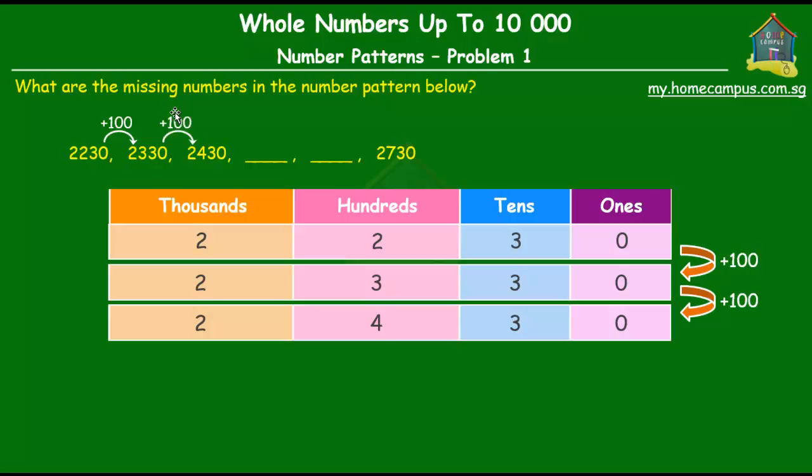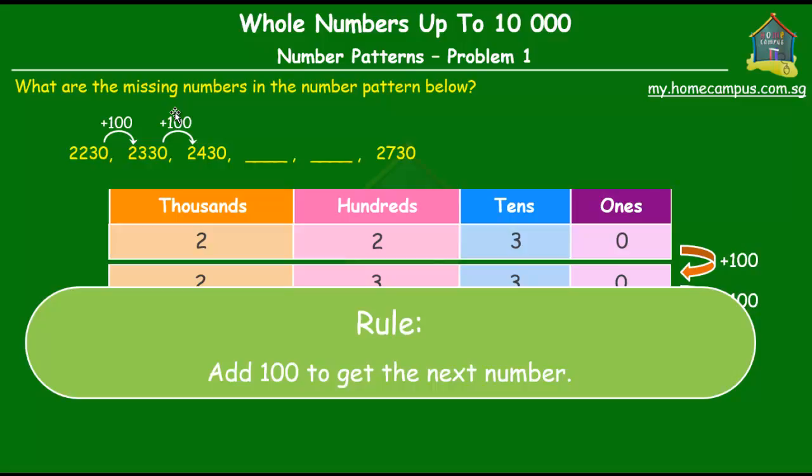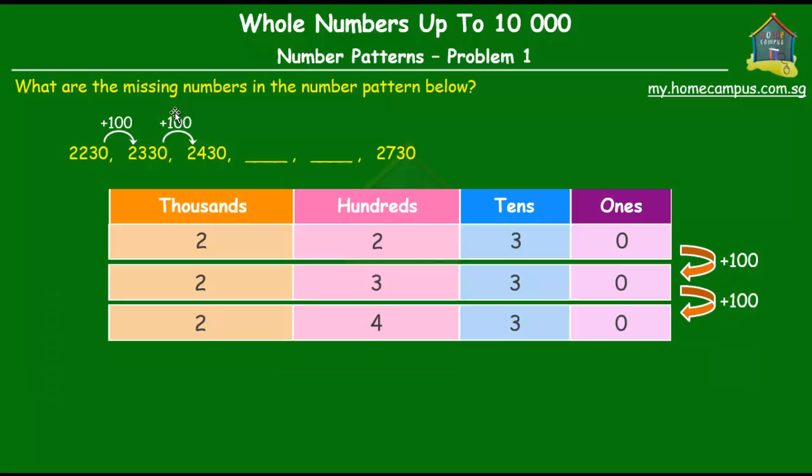So we have found a rule here and that is that to get the next number, add 100 to the previous number. So that'll help us to get the two blanks, the two missing numbers.